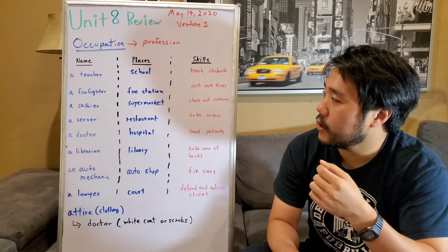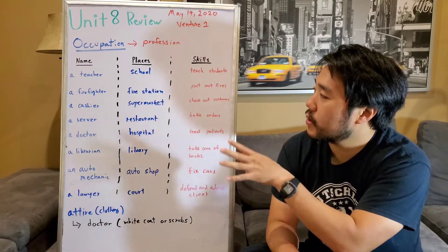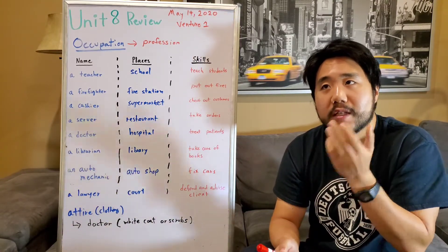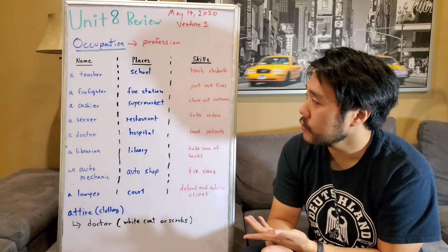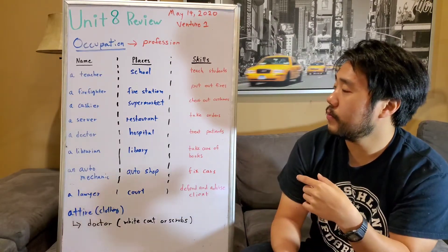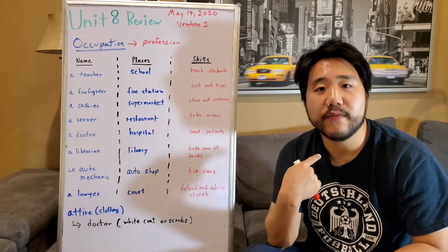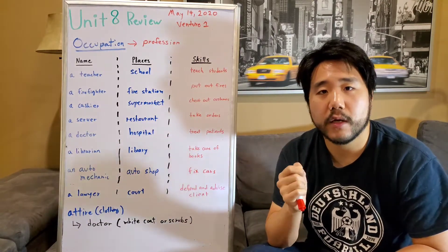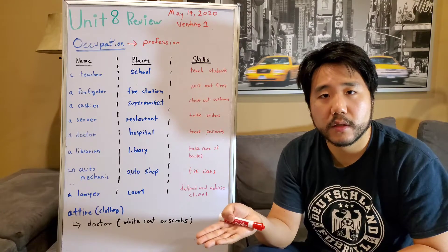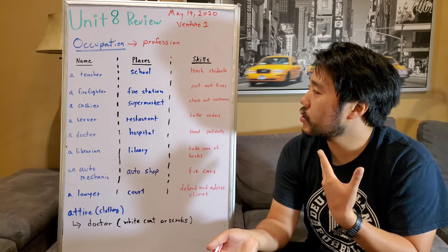Each occupation has its own respective place of work and respective skills. We use the places and skills to identify a person's occupation. For example, if I'm at a school and I see a person teaching students using a whiteboard and a textbook, I can safely assume that person is a teacher.